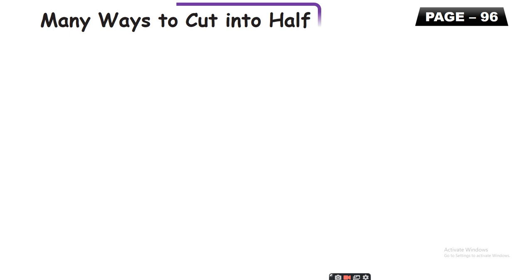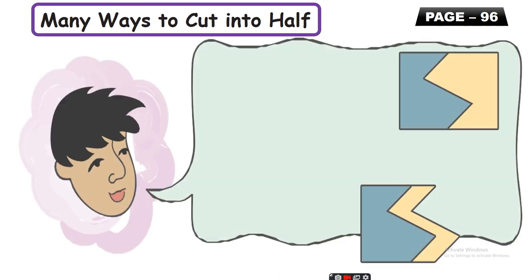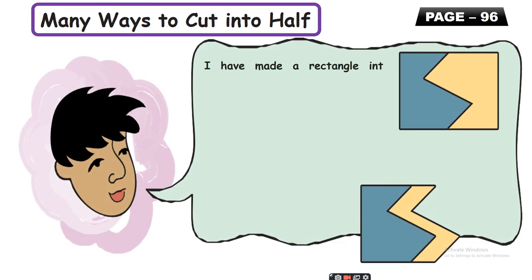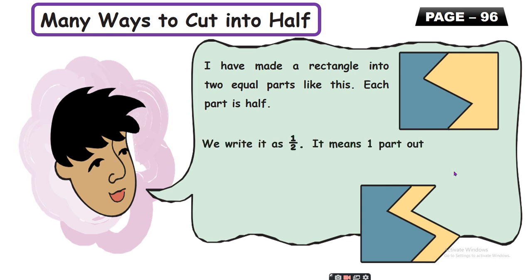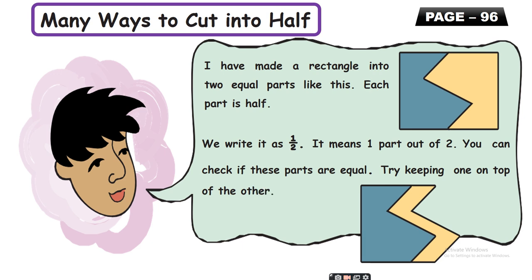Let us start page number 96: 'Many ways to cut into half.' This boy says, 'I have made a rectangle into two equal parts like this — each part is half.' He is saying that he divided the rectangle into two equal parts, so every part is half of the rectangle. We write it as one upon two — it means one part out of two.